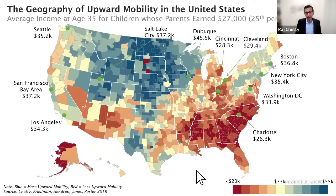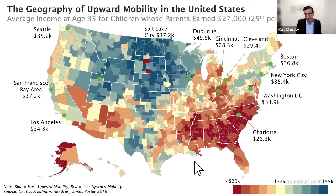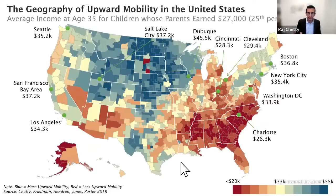This map has captivated our interest because it shows tremendous differences in economic opportunity across the US, and gives us a new lens to understand the determinants of economic mobility. If we can figure out what's different in Dubuque versus Charlotte versus Salt Lake City, maybe we can learn what drives economic mobility. Researchers have identified factors like poverty rates, inequality, fraction of single parents, and school quality as strong predictors of this variation.